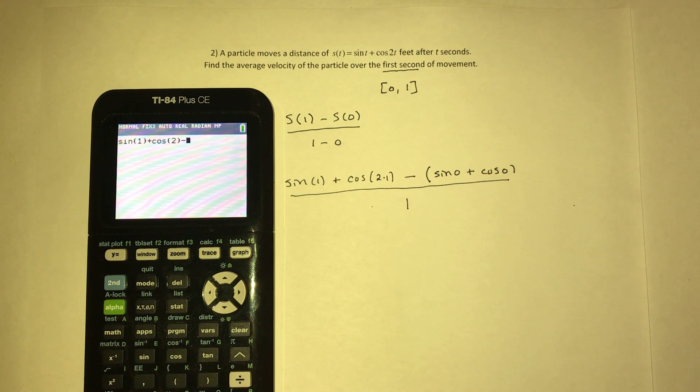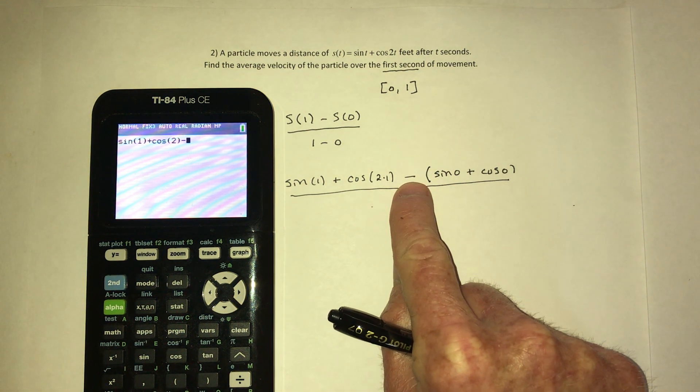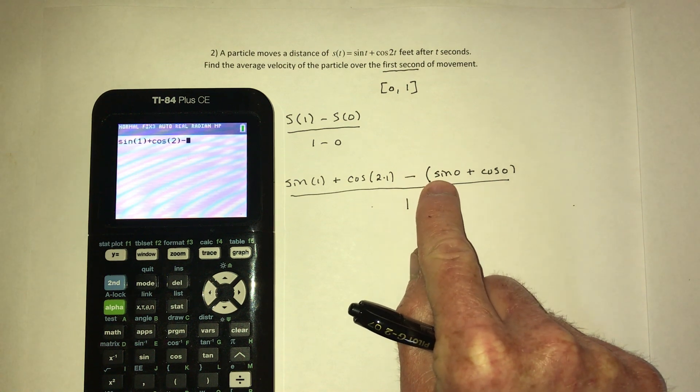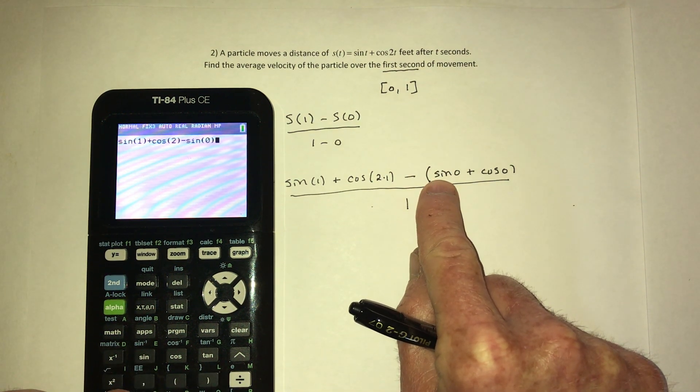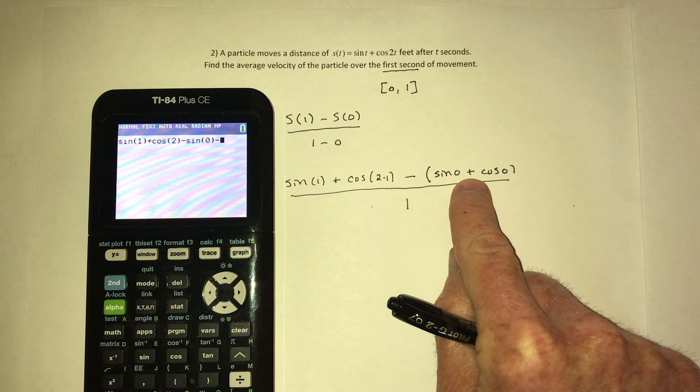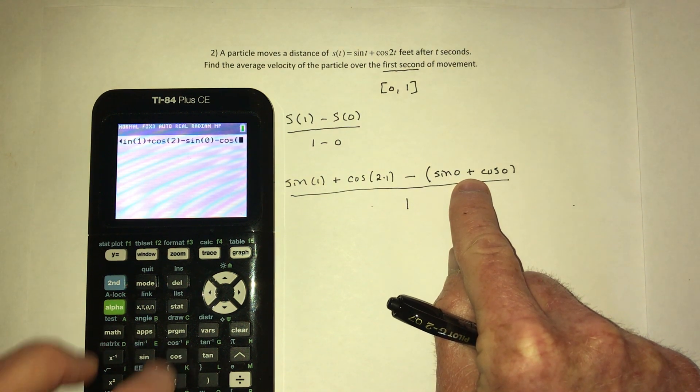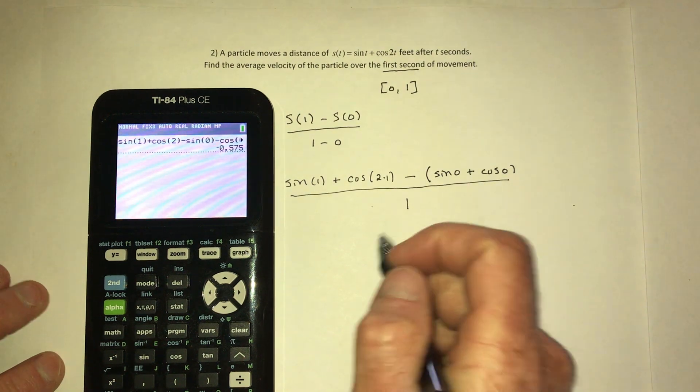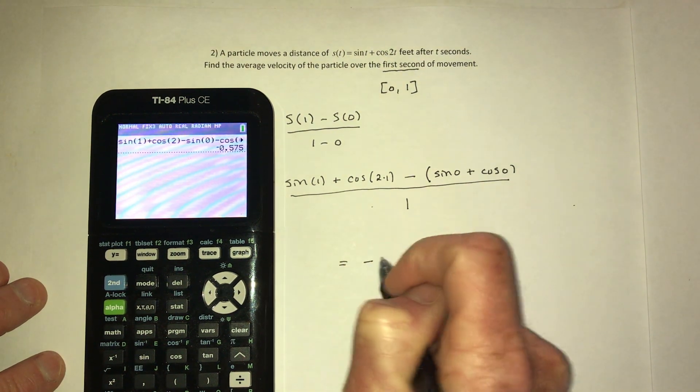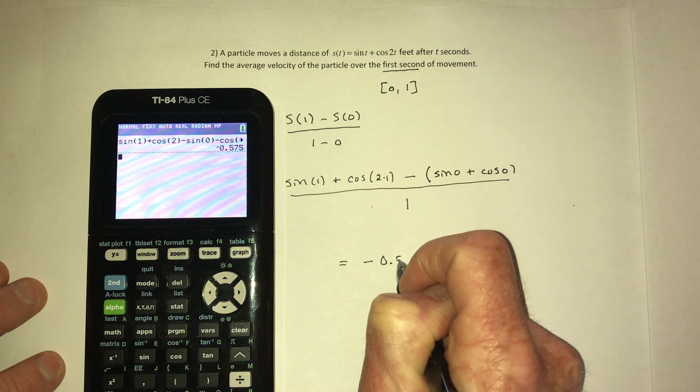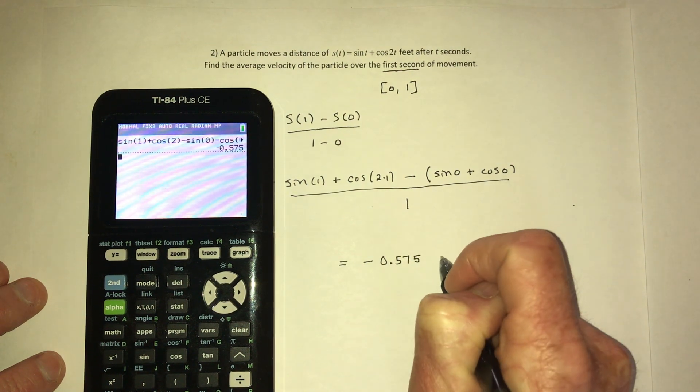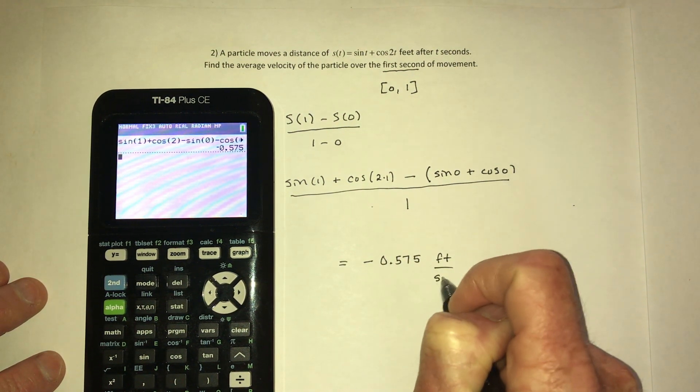And then minus, and I'm just going to distribute this negative, so minus sine of zero and then distribute it, so it's minus cosine of zero. And then it's divided by one, which means that's the final answer: negative 0.575, and this would be in feet per second.